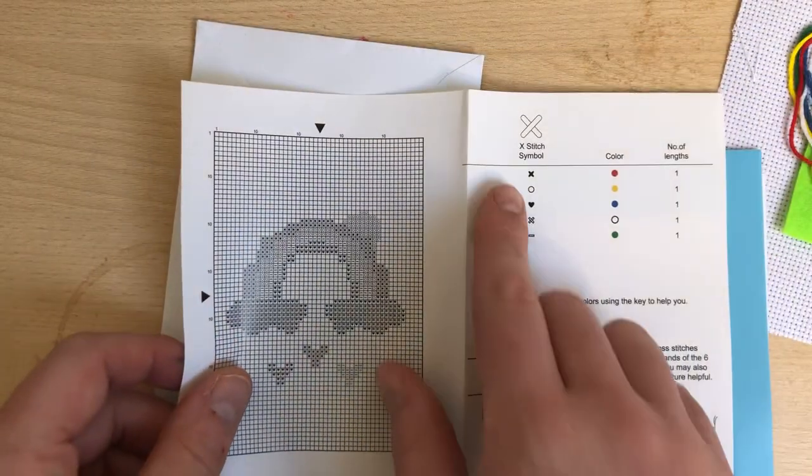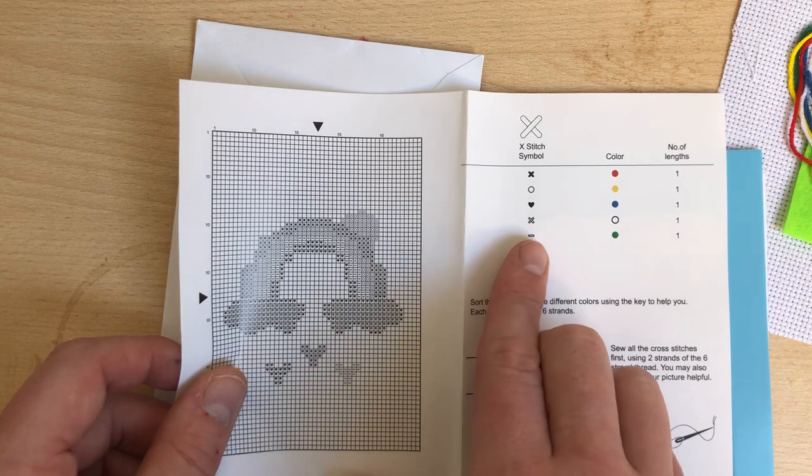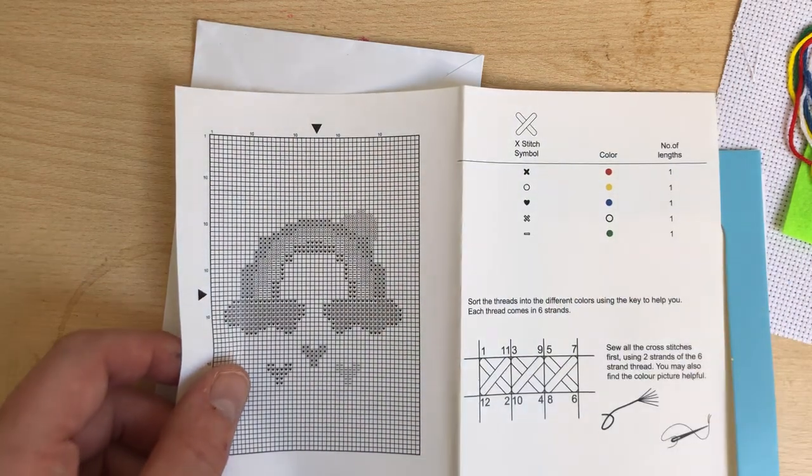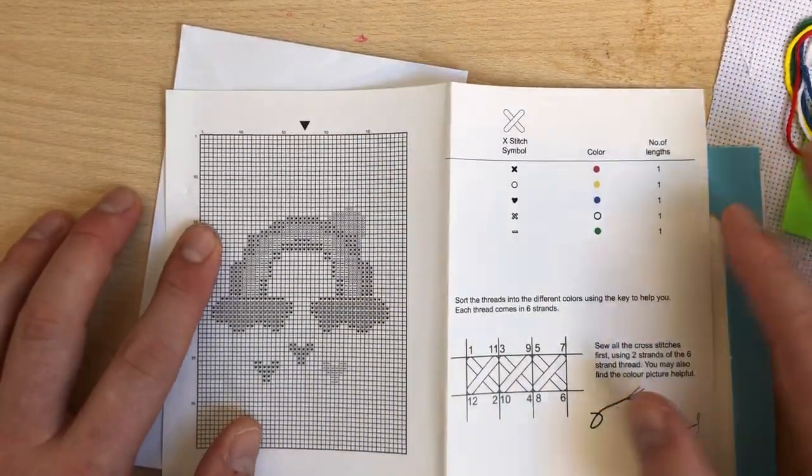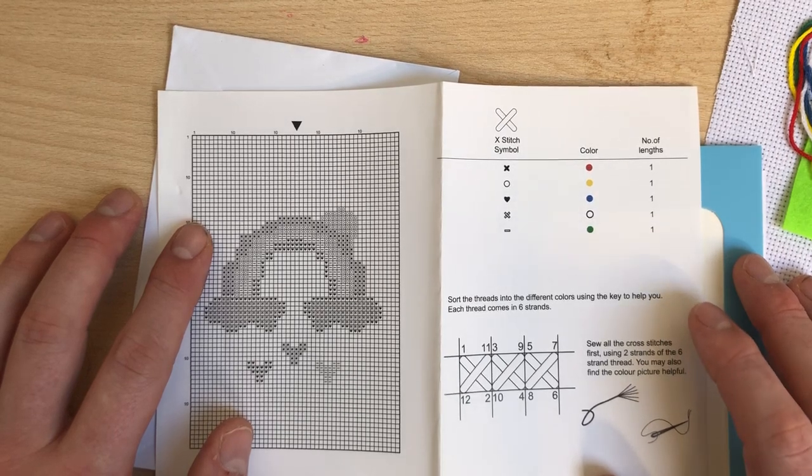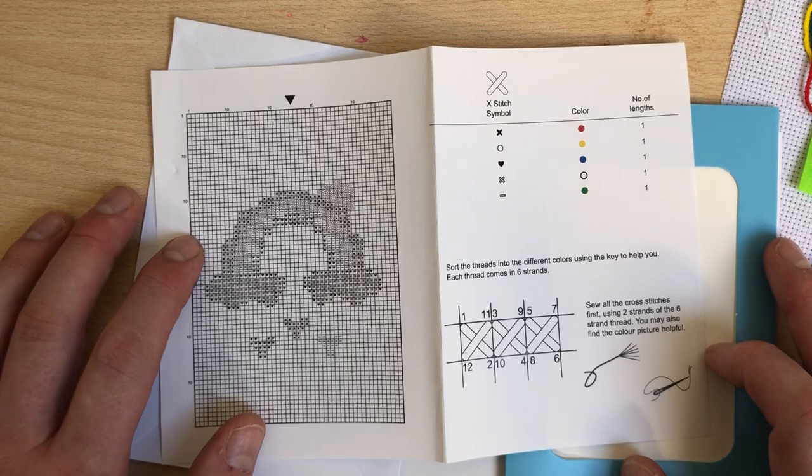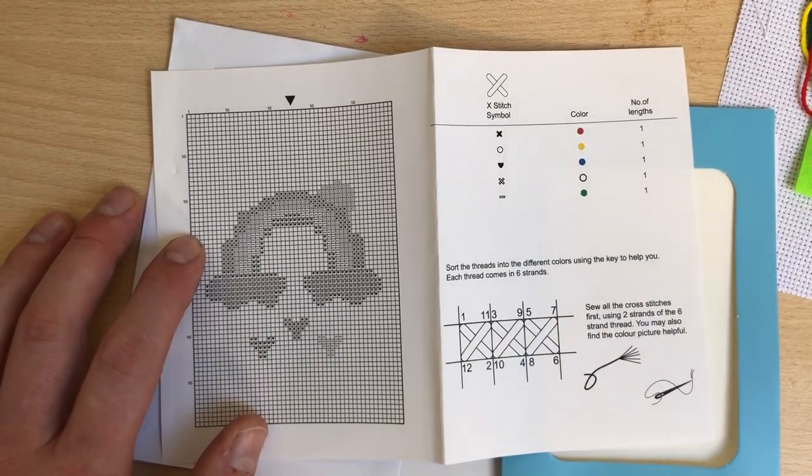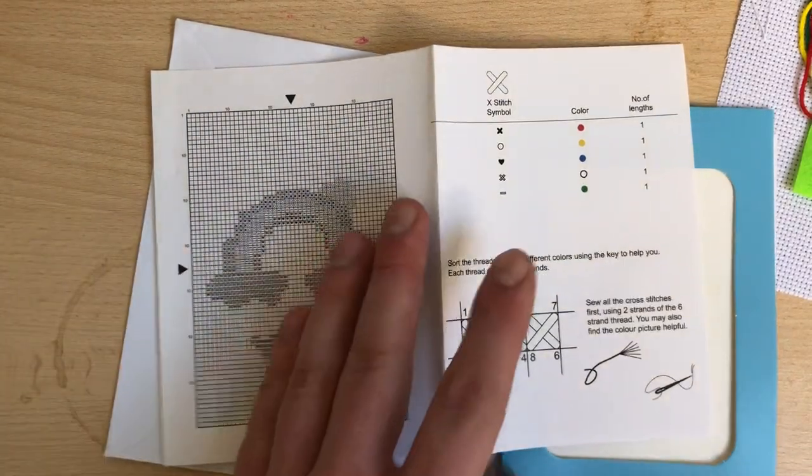So as you can see we've got X symbols, circles, love hearts, a cross and what looks to be an equal sign. We've got colours of red, yellow, blue, white and green and obviously the number of lengths is one. Sort the threads into different colours using the key to help you. Each thread comes in six strands and then sew all the cross stitches first using two strands of the six strand thread. You may also find the colour picture helpful.